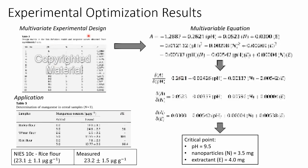Here's an example of their results. They used a multivariate experimental design with parameters such as pH, the amount of nanoparticles in milligrams, the amount of PAN in milligrams, and the analytical measurement derived from the ICP. They take all these different variables, run a certain number of trials to optimize the experiment, put that through a multivariable equation, and come out with a critical point — an optimized value for pH, nanoparticle content, and extractant content.